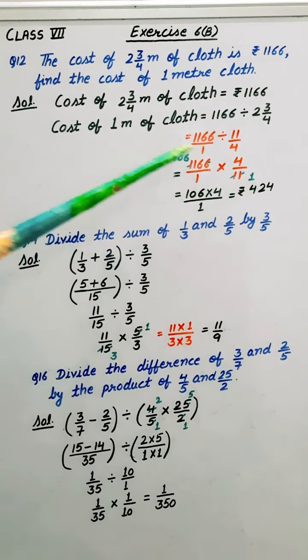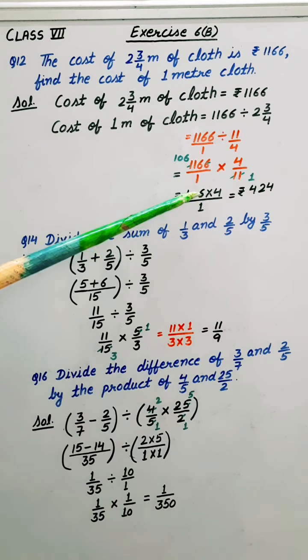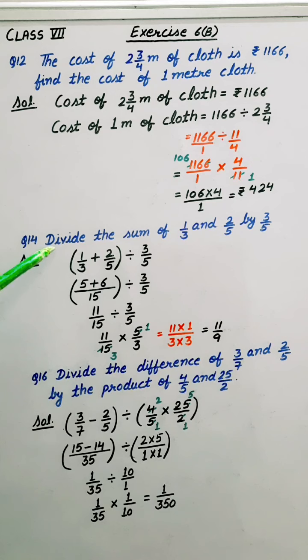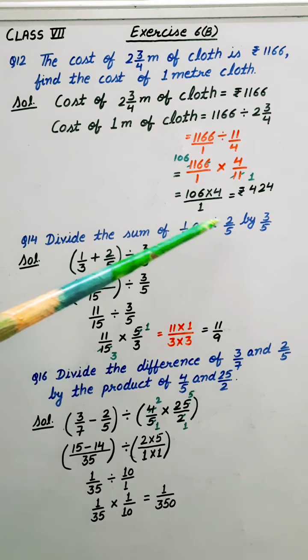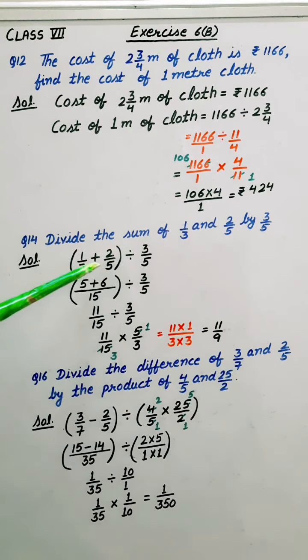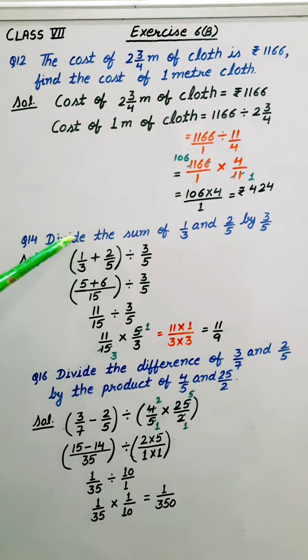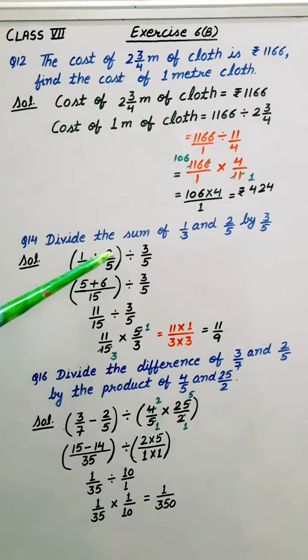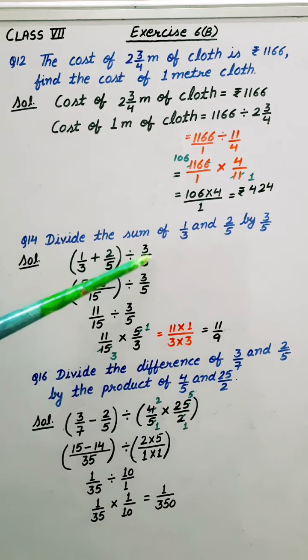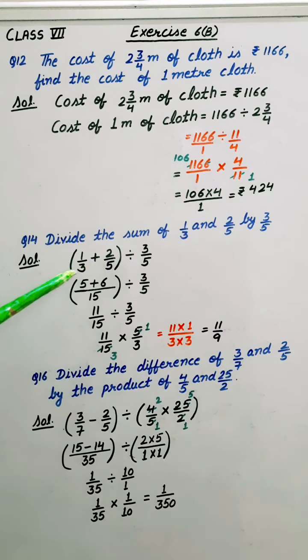So this is the cost of 1 meter of cloth. Coming to 14th question. Divide the sum of these two numbers by 3 by 5. So let's find 1 by 3 plus 2 by 5. We have to find their sum and then divide by 3 by 5. So taking LCM.